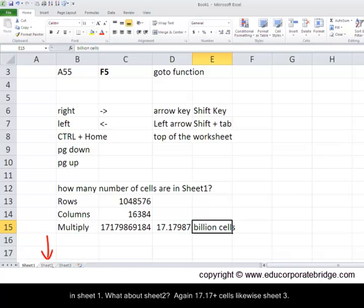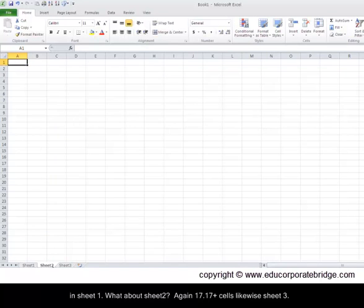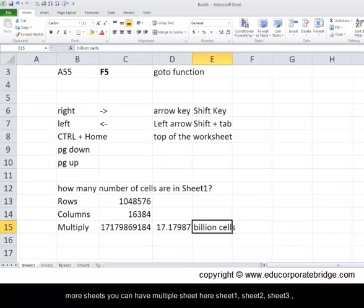What about sheet 2? Again 17.17 plus cells. Likewise sheet 3. Can I make more sheets? Yes you can. You can click here and insert more sheets. So you can have multiple sheets here. Sheet 1, sheet 2, sheet 3, sheet 4, sheet 5, sheet 6 and you can go on and on and on.